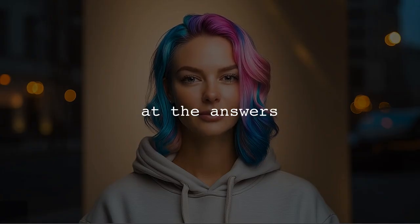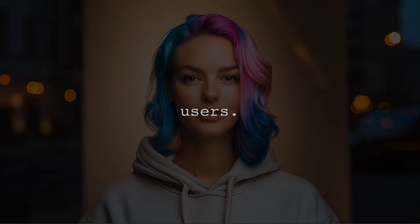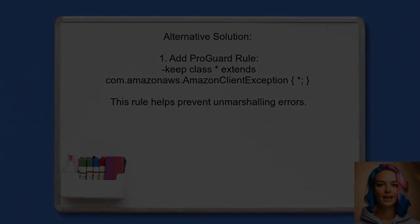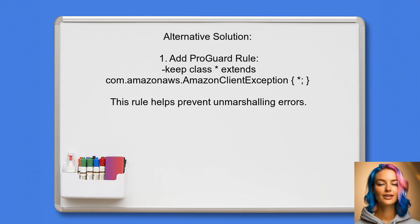Now let's look at answers provided by other users. An alternative solution suggests that unmarshaling errors can also arise from classes in the AWS Core Library, not just from the Cognito Identity provider. They recommend adding a ProGuard rule to prevent crashes for all AWS library exceptions.